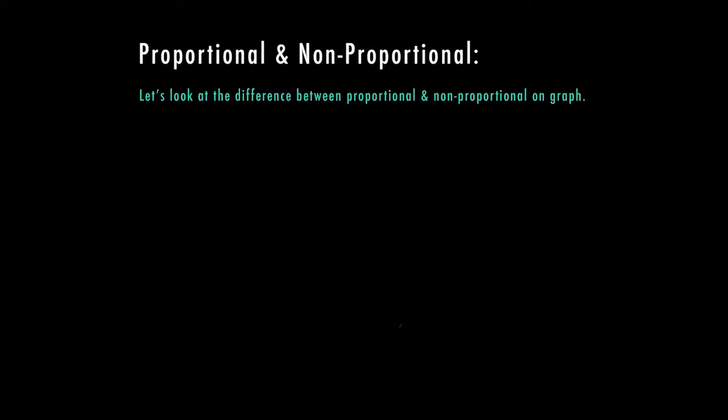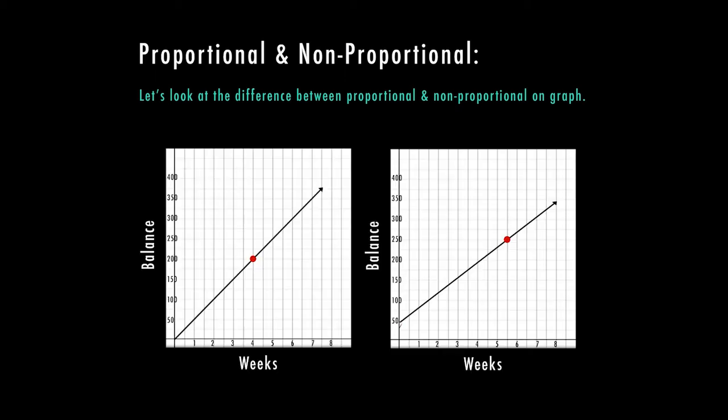Let's look at the difference between a proportional and a non-proportional situation on a graph. In this case, we have a balance on the left per week, and same thing on the right, our balance is going up. So that means we're putting money in our account. If you look here at the first one, we have a point here at 4, 200. So I can tell by this that they are making $50 each week. And I know that's all it is because it looks consistent.